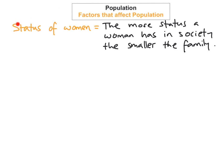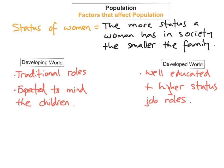The fifth factor that affects population is the status of women, which is a very important role within society. The more status that a woman has within society, generally the smaller the family she will have. The lesser the status, usually the larger family she will have. In developing worlds, the status of women is much lower and they usually have very traditional roles — women in these countries are expected to mind the children, stay at home, cook the meals, and sow the crops. Because of their lower status, they have much larger families and their role is basically just to look after the children.